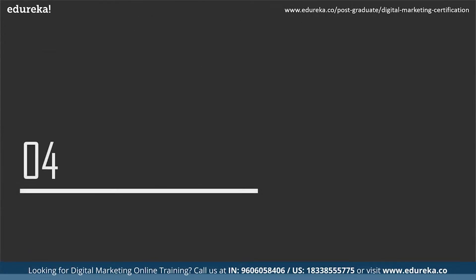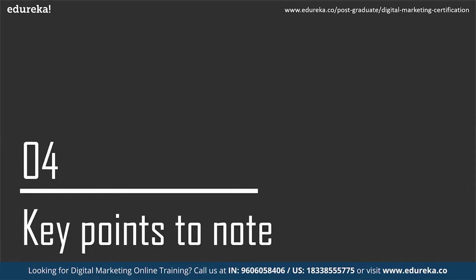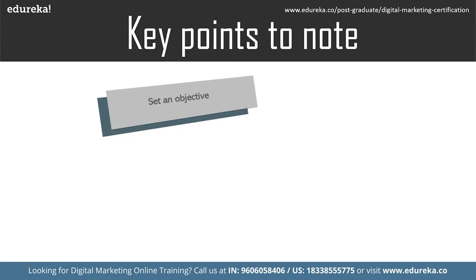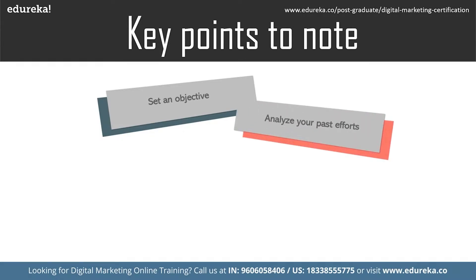The next thing on the list is key points to note while creating a strategy. The first one is: know what your business requires and set a corresponding objective. You should be very particular about your business goals. The digital marketing mission must fit into your overall plan. You should also be able to set and measure your KPIs — get familiar with these by identifying the figures you want to achieve, and analyze your previous digital marketing efforts for better KPIs.